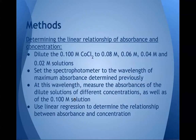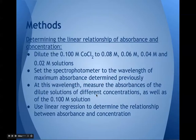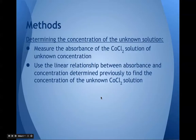Methods continued: To determine the linear relationship of absorbance and concentration, we first diluted the 0.1 molar CoCl2 to various molarities. Then we set the spectrophotometer to the wavelength of maximum absorbance determined previously. At this wavelength, we measured the absorbance of the dilute solutions of different concentrations, as well as that of the 0.1 molar solution. Using linear regression to determine the relationship between absorbance and concentration, and finally, we determined the concentration of the unknown solution by first measuring its absorbance and then using the linear relationship to determine the concentration of the unknown cobalt chloride solution.